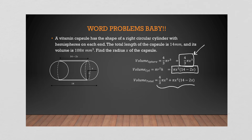I want you to get used to tackling this algebraically first. There are moments in the workbook where I've asked you to solve for the polynomial but then use Desmos, because we can't always use the rational root theorem if the roots are not rational. If you work out this equation, your total volume given is 108π, equal to (4/3)πx³ — where x is our radius — plus πx²(14 − 2x).